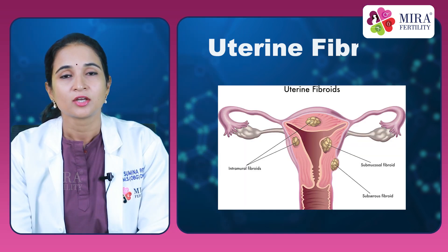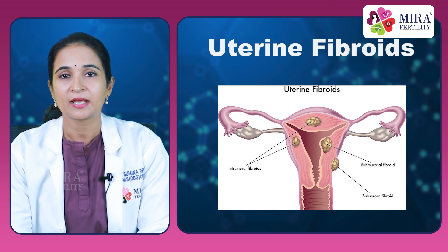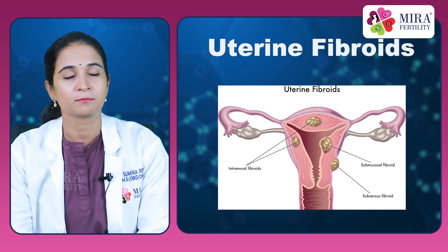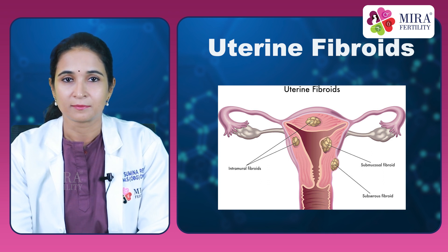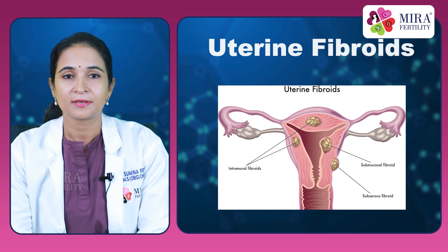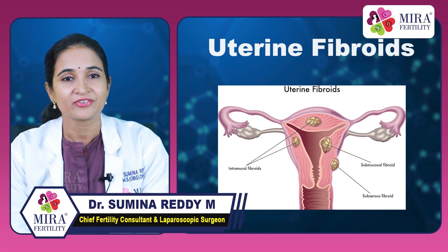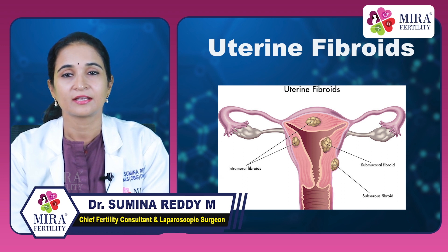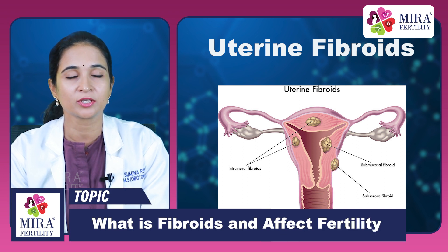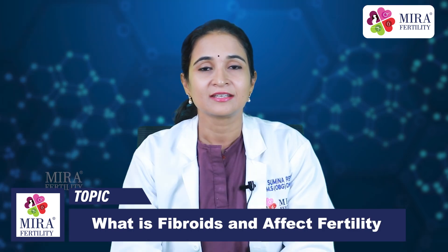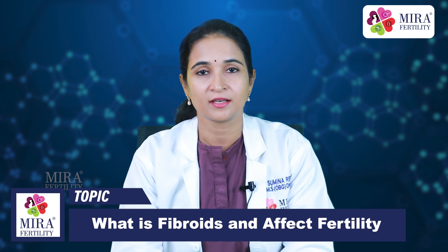To summarize, uterine fibroids are common and can affect fertility in many ways. They can affect whether sperm and egg meet. They can affect whether an embryo can implant within the inner lining of the uterus. They can affect whether a pregnancy can continue, and they can affect the growth and positioning of the baby during pregnancy. They can also increase the chance of cesarean delivery.